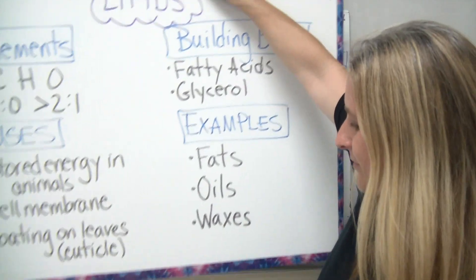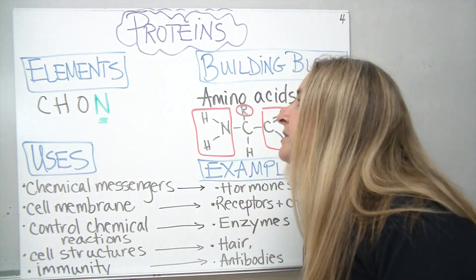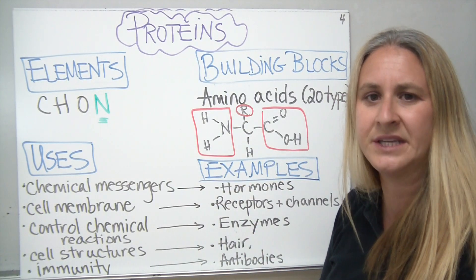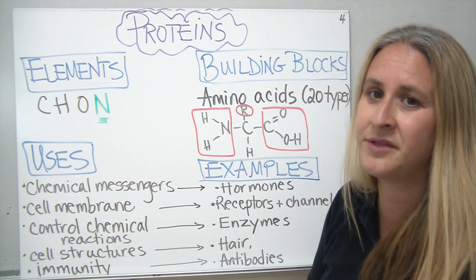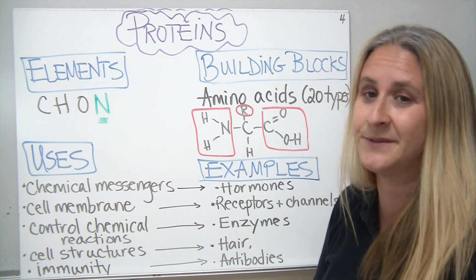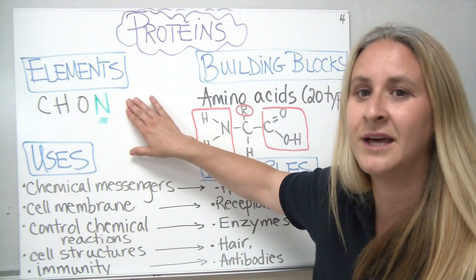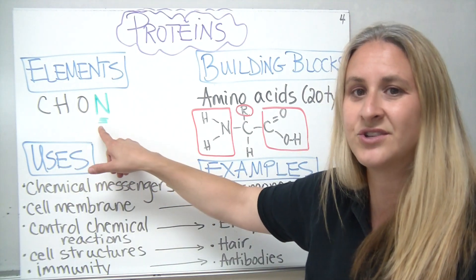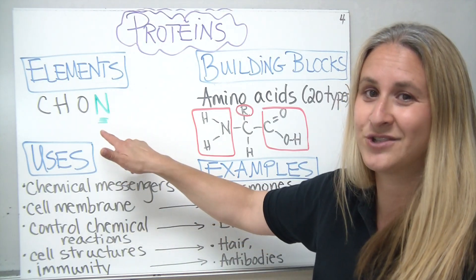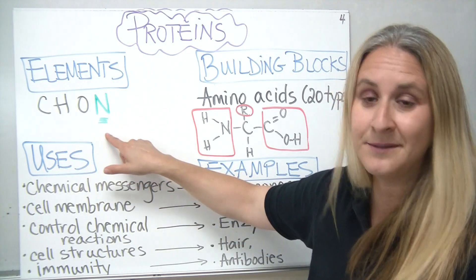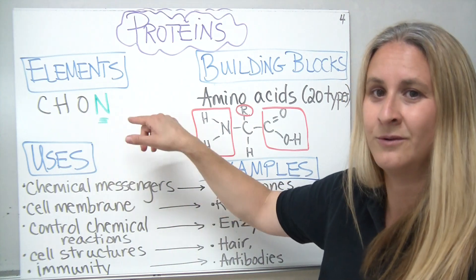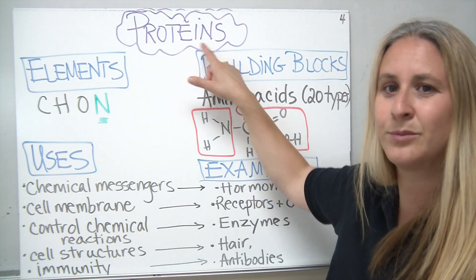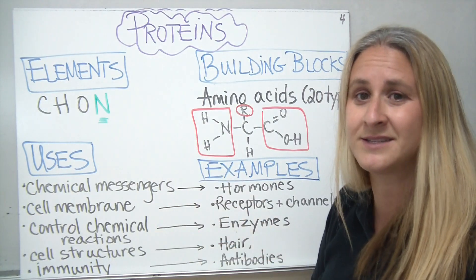The next main organic compound we talk about are proteins — our third type. Many people think of muscles when they think of proteins, but there are other things proteins make up in our bodies. In terms of elements, proteins now have a new addition: instead of just carbon, hydrogen, and oxygen, we also have nitrogen. A helpful way to remember this is CHON — C-H-O-N for proteins. If you look at the word 'protein,' there's an N in it, to help you remember it's one of the ones that contains nitrogen.